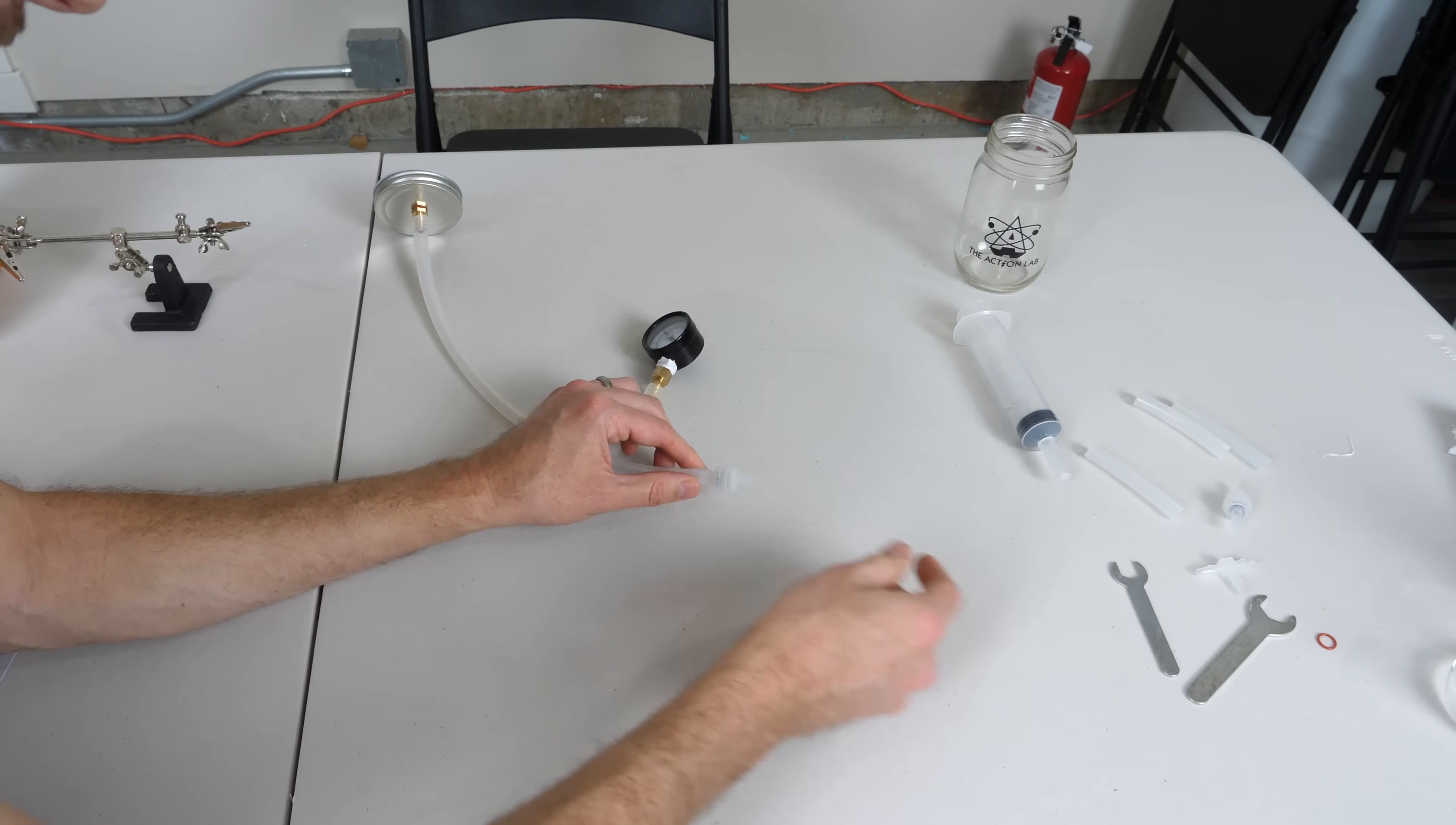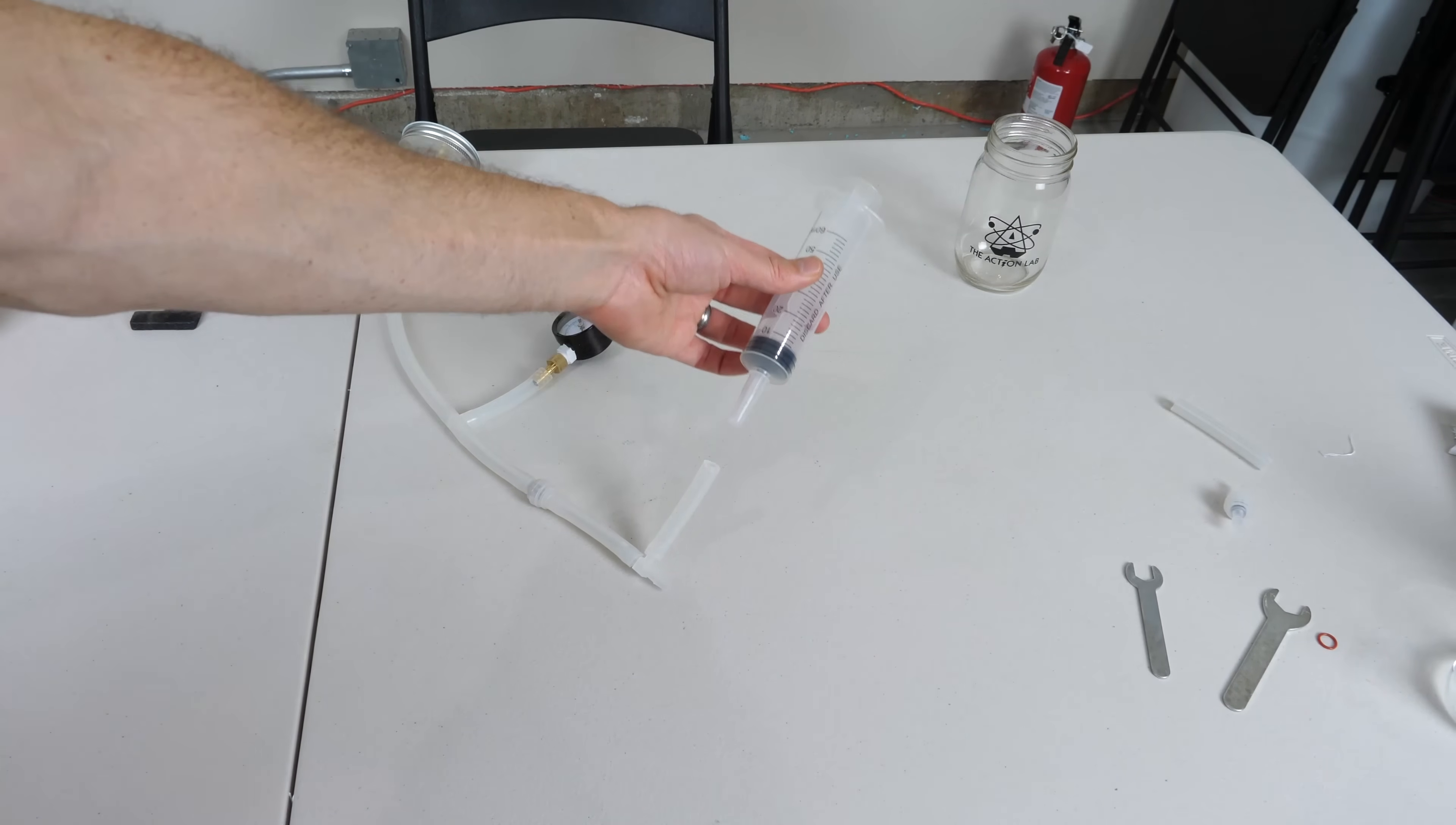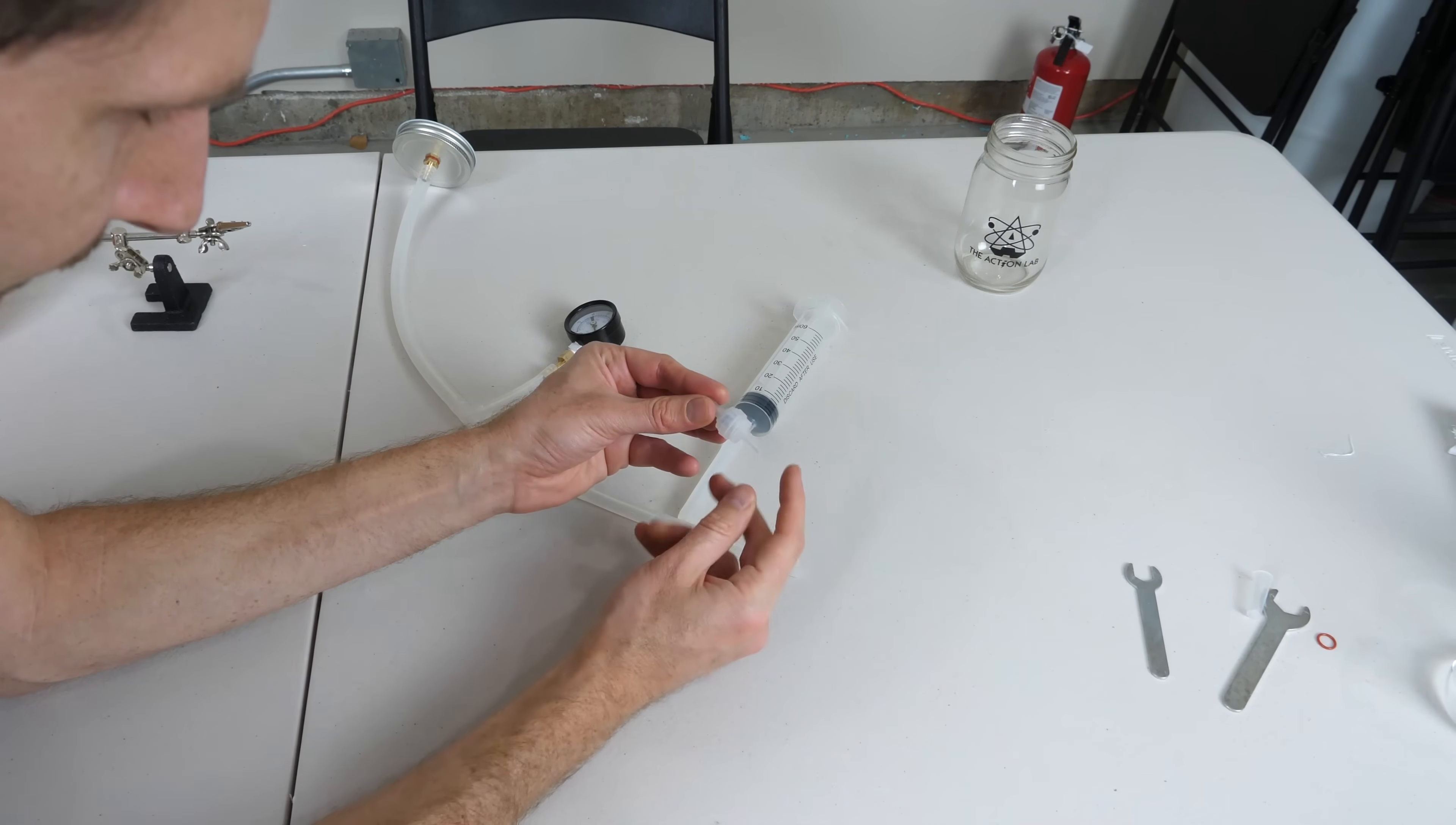So you plug it in here and plug another one in. Another three-way splitter. Then you plug in your syringe. Remember to take the cap off of it and plug it in. Then your last hose. And then your last one-way valve. The arrow should be pointing that way again.